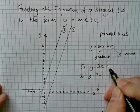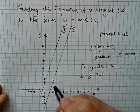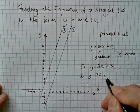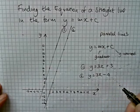So our first line is y equals 3x plus 3. My second line has the same gradient, so we've written that down already, but it goes through minus four. So the second line has the equation y equals 3x minus 4.